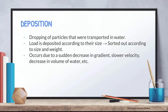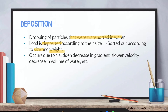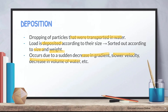Deposition is simply the dropping of particles that were transported in water. The load is deposited according to size and weight. If you've heard of the Hjulström curve, that's a good indicator of velocity and how different sediments deposit at which point of the river. Deposition occurs due to a sudden decrease in gradient, slower velocity, or decrease in volume of water.